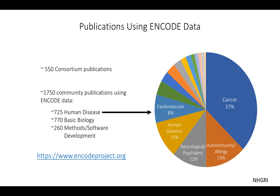What kind of publications use ENCODE data? Here is a breakdown of around 1,750 community publications. A huge chunk use ENCODE data to understand human diseases, roughly the same number use it to understand basic biology, and a sizable number use it to develop novel methods and software. Because the number one application is human diseases, that's why we are here — to facilitate this application. These diseases include cancer, autoimmunity, neurological disorders, human genetics diseases, and cardiovascular disease.